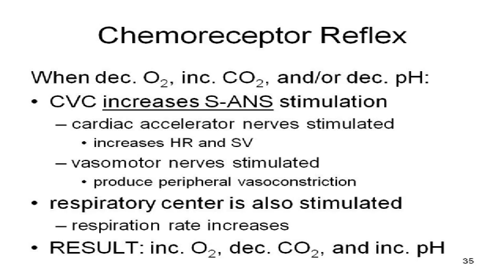Those chemoreceptors send signals to the cardiovascular centers, which say: activate the sympathetic autonomic nervous system. I've got to get more blood — increase the heart rate, increase the stroke volume, produce peripheral vasoconstriction, and increase blood pressure to make sure blood is getting to where it needs to go.